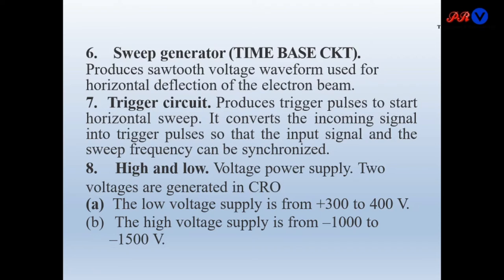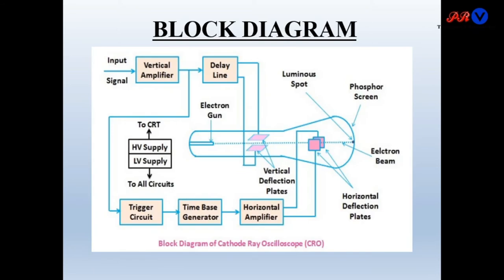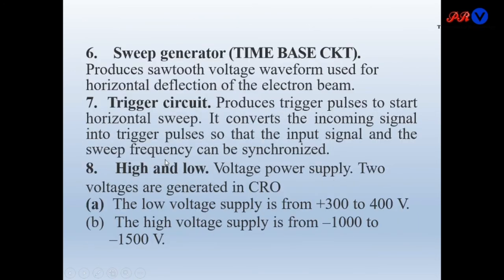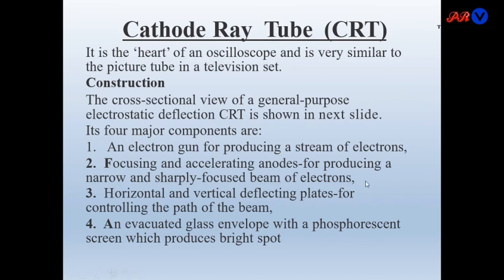Then we have high and low voltage supplies. The low voltage means plus 300 to 400 volts and the high voltage means minus 1000 to minus 1500 volts. Now we will study the CRT. It is the heart of the oscilloscope and is similar to the picture tube in a television set.